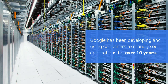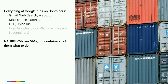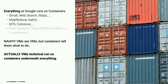Today, everything at Google runs on containers — Gmail, web search, Maps, MapReduce jobs, Colossus, even Google Cloud Platform VMs. We're not running Kubernetes internally; we're running Borg internally. Kubernetes is not an open-source version of Borg — what happened is we spent 10 years learning a whole bunch of stuff, and Kubernetes started with that base knowledge of what you should never do. We launch 2 billion containers a week. We stand by this — it is a viable way of running at scale.